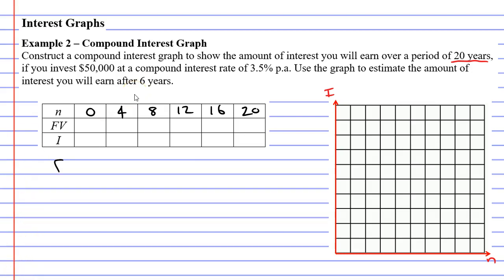We'll grab our compound interest formula which is FV = PV(1 + r)^n. The $50,000 represents our present value or the amount we are investing. The 3.5% is our r, remembering that we divide by 100 giving us 0.035 as r, and n keeps changing.